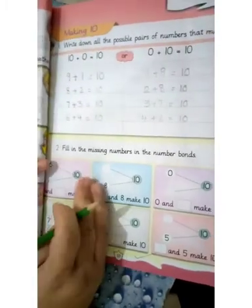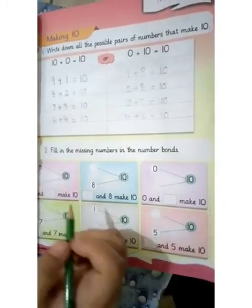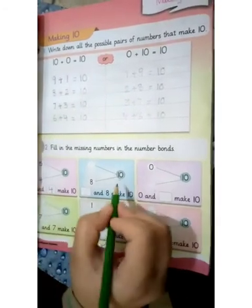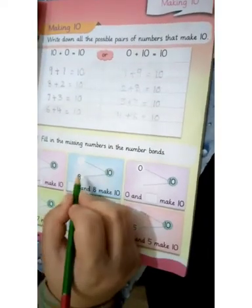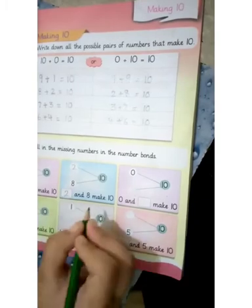Now, 6, 10, 6. Okay. 4. 6 and 4 make 10. And now, 10, 8. 2. 2 and 8 make 10.